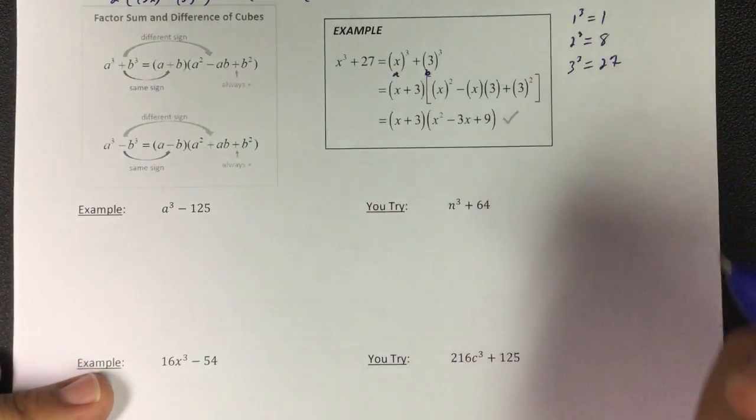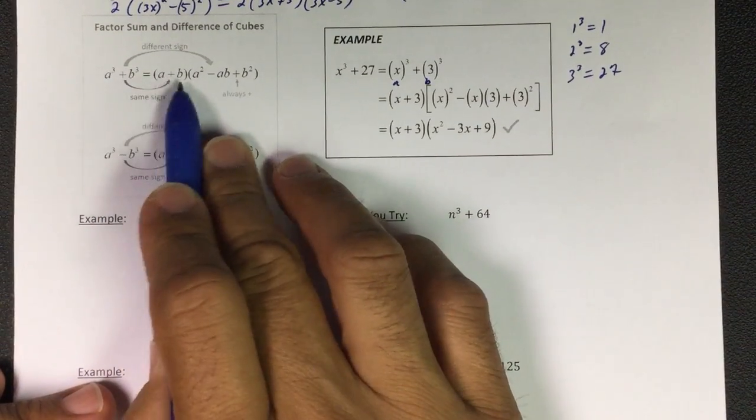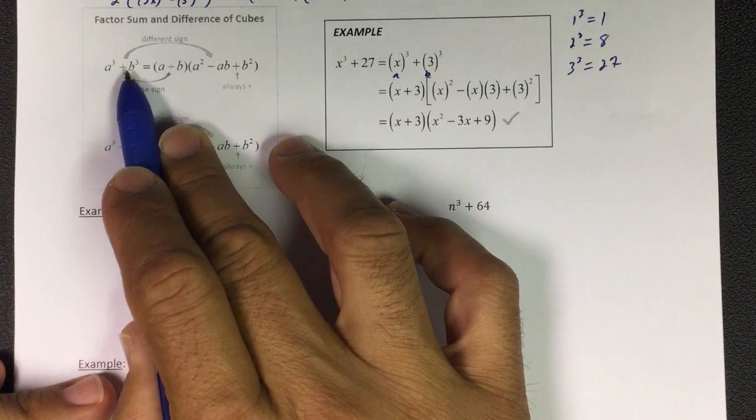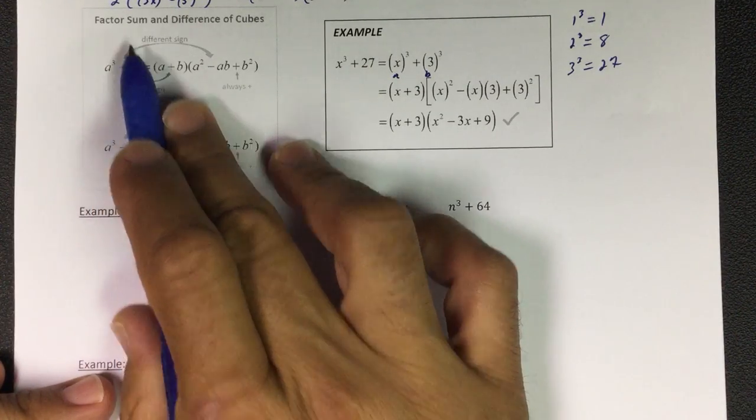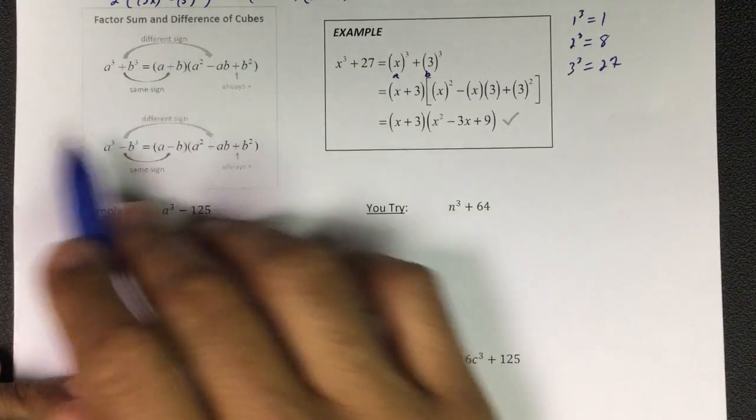The way it works is when you're setting this up, you're gonna have a binomial and then a trinomial. We're doing sum and difference of cubes together. They both have the same formula.